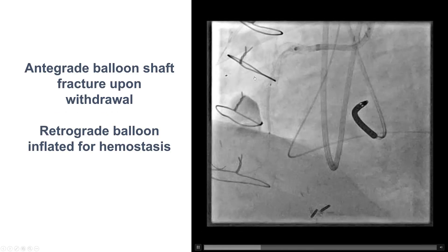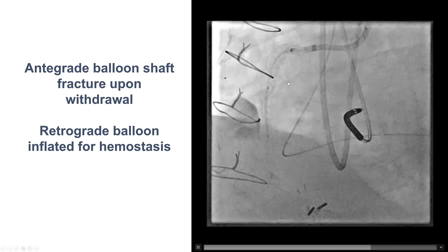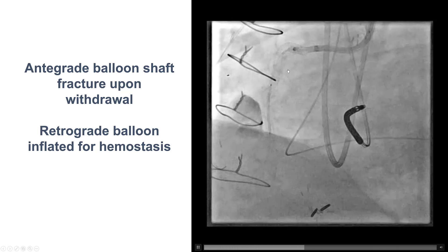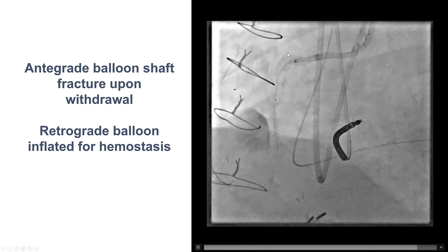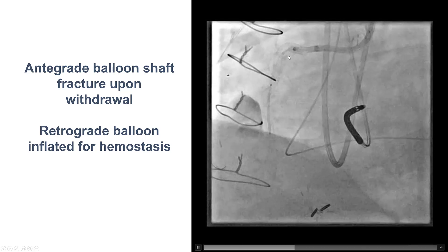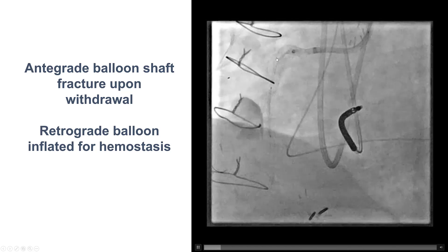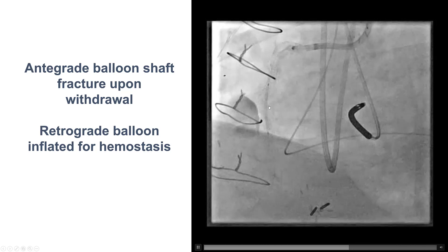So we inflated, we deployed the stent, and then we inflated the antegrade balloon. But then, as we were trying to withdraw the balloon, we withdrew it a little too early, so we had fracture of portion of the balloon that remained within the proximal right coronary artery, while we still had not achieved hemostasis of the site of the perforation.